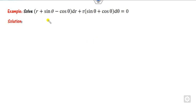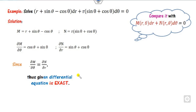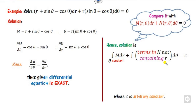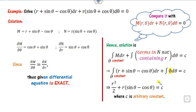Quickly move to the second example. Here instead of x and y, the variables are r and θ. So you can replace in your mind x as r and y as θ. You compare this in terms of M dr + N dθ. We check whether ∂M/∂θ equals ∂N/∂r — both are the same, so this is exact. Once exact, you find the solution with θ constant. There are no terms in N not containing r, so that part is 0. Integrating gives r²/2 + r·sin θ + r·cos θ = c, which is the required answer.